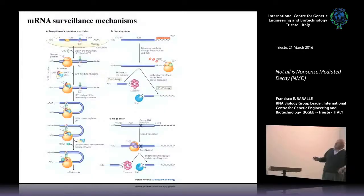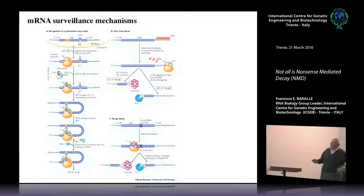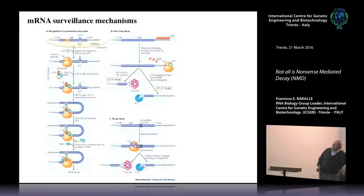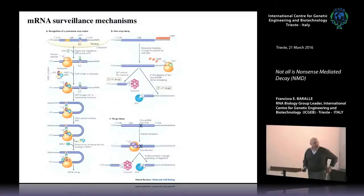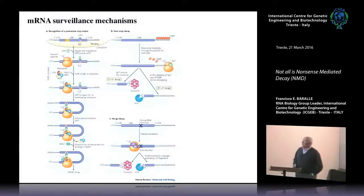There are other mechanisms, like non-stop decay. If an mRNA doesn't have a stop codon, the ribosome continues up to the poly-A. Similarly, there are stalls, and a complex called SKI-1 and SKI-7 and others will bind there and start the degradation using the exosome. In no-go decay, if there is a structural feature that makes the ribosome stop in the middle of the mRNA, another system recognizes that, cuts the RNA, and then nucleases from the 5' and 3' ends degrade it.